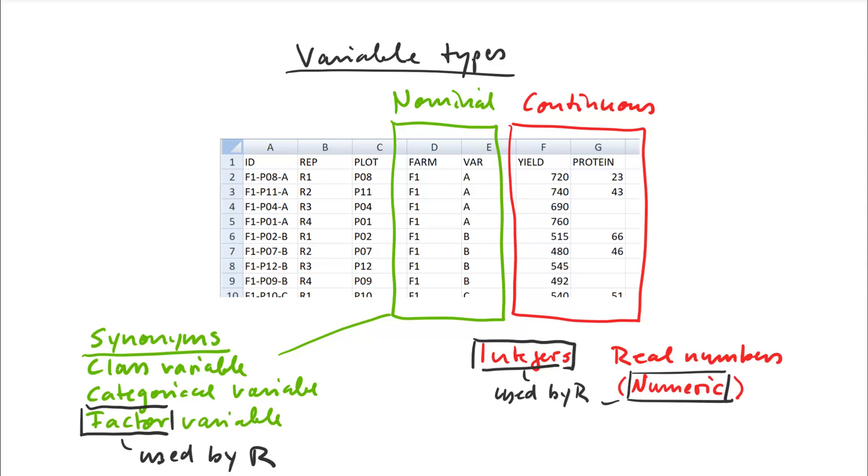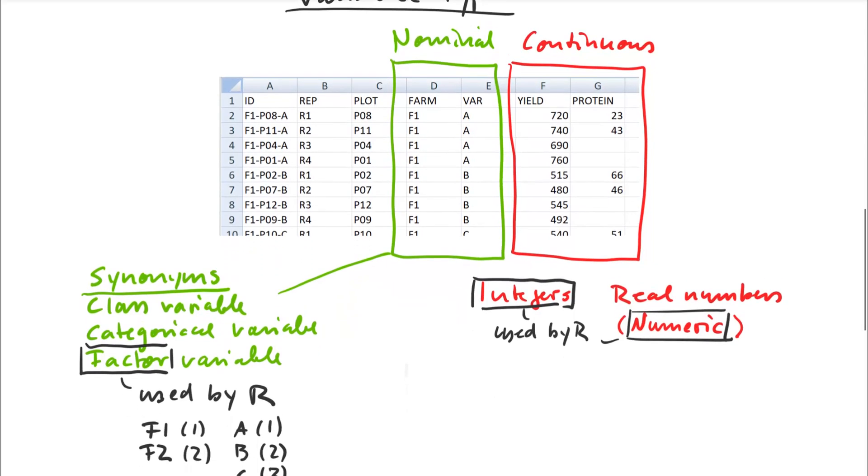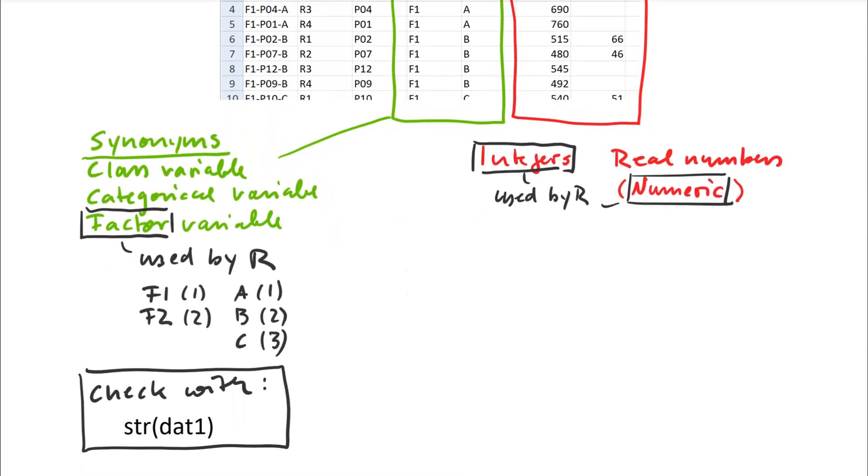The other thing that R distinguishes among the continuous variables are integers and numeric variables. So numeric variables are real numbers, so they can have a decimal point. Integers would be whole numbers, positive and negative. And you can check that in R with the structure command. So str that will give you either an integer, a numeric or a factor variable, or there's also logical variables if you have true and false variables.